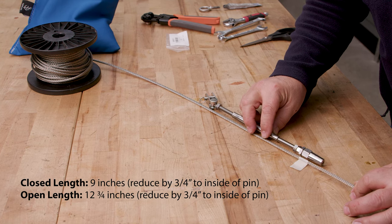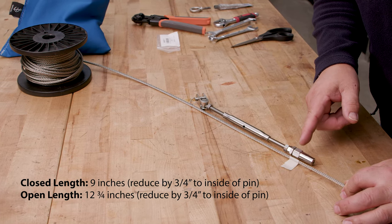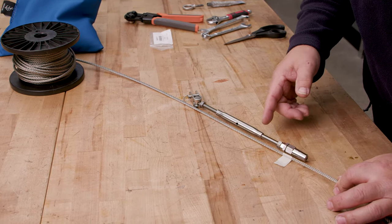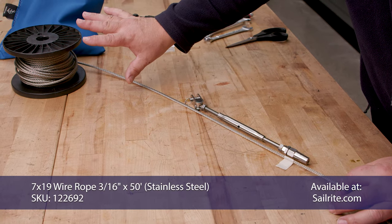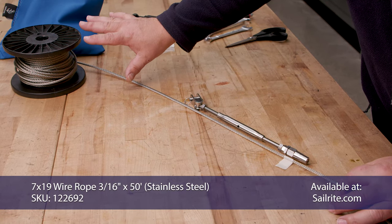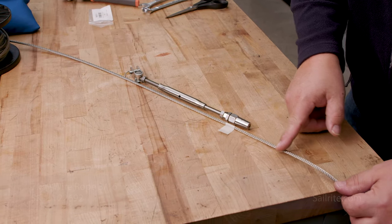So with my turnbuckle expanded about three quarters of its length, I've marked my cable where I need to cut it. This is the end that I'm not going to be using, and this is the end that I will be using.